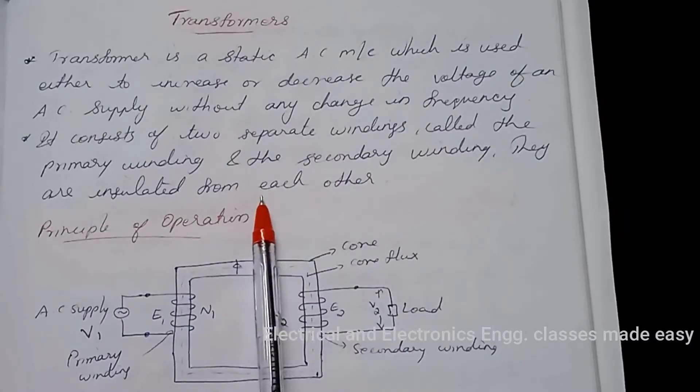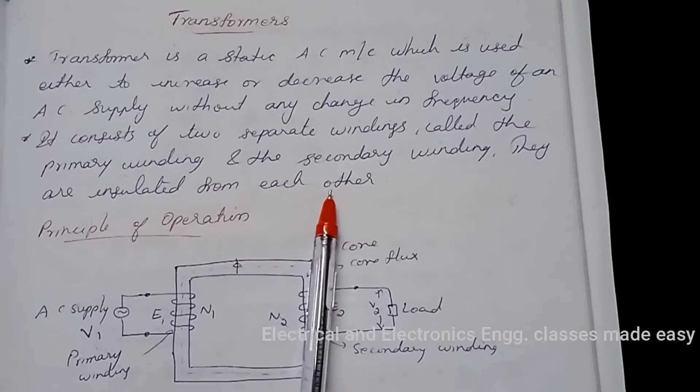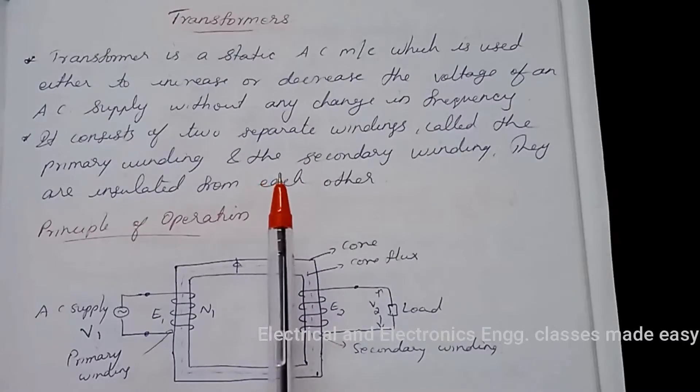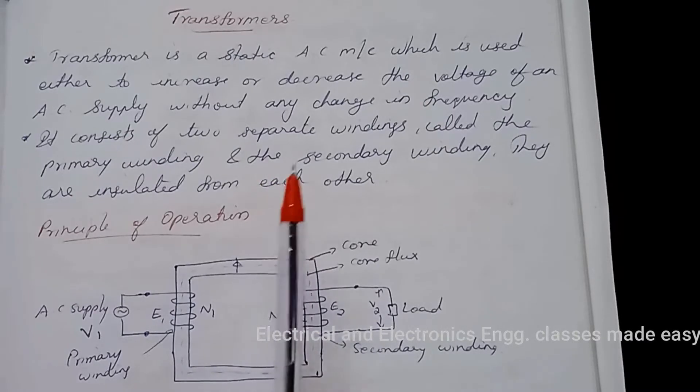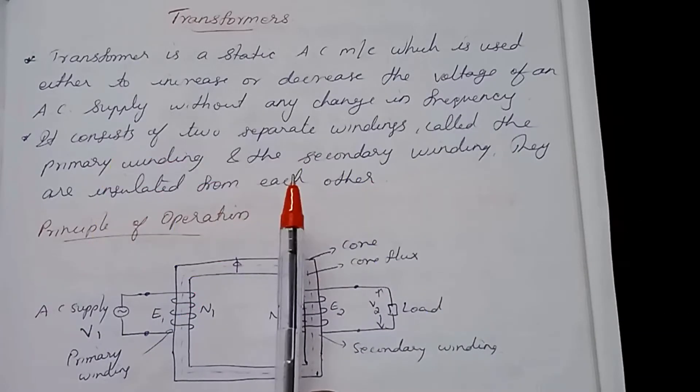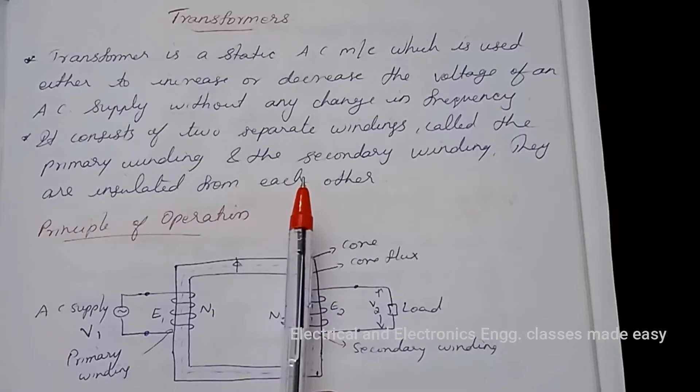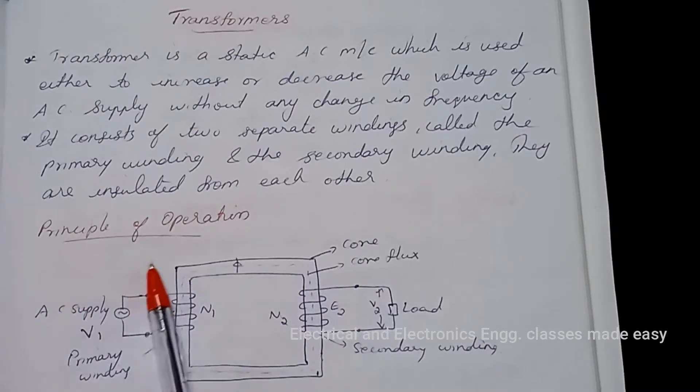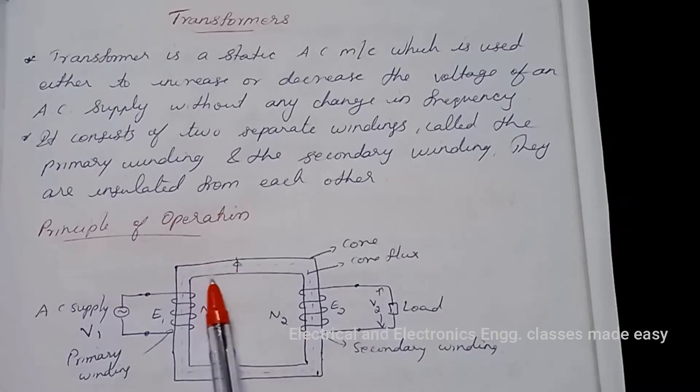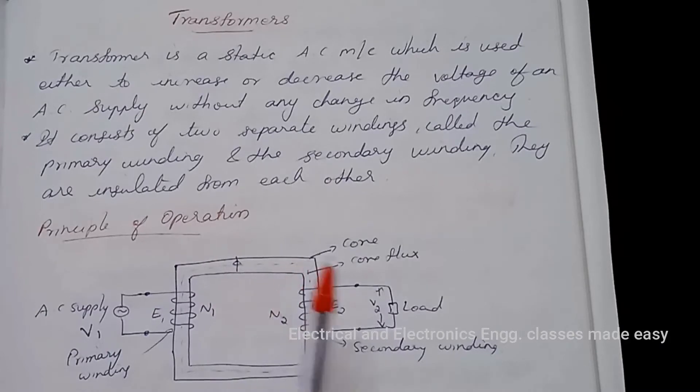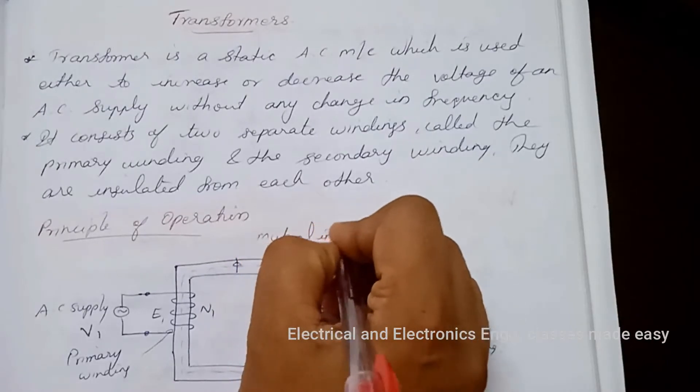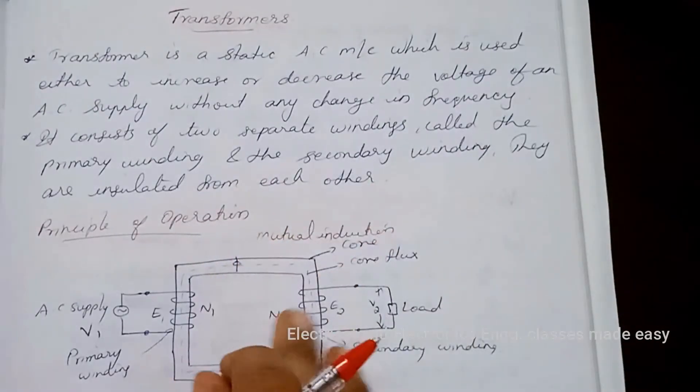It consists of two separate windings called the primary winding and the secondary winding, and they are insulated from each other. The transformer is used in almost every field of electrical engineering. This device plays an integral part in power distribution systems and can be found in many electronic circuits and measuring instruments. The transformer works on the principle of mutual induction.